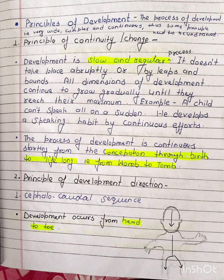Development is slow and regular — it does not take place abruptly. All dimensions of development continue to grow gradually until they reach their maximum. For example, a child cannot speak all of a sudden. He develops a speaking habit by continuous effort.